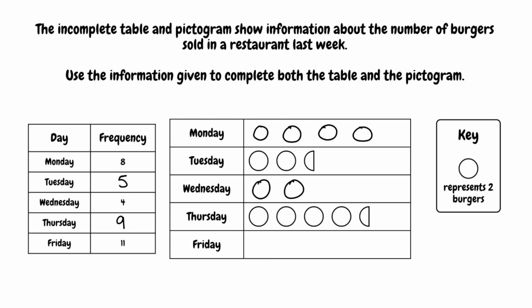And then finally on Friday, there were eleven burgers sold. Going through our pictogram again, a full circle represents two burgers — so we've got two, four, six, eight, ten. Then we need one more burger. So we're not going to draw a full circle this time; we're going to draw a semicircle, as the semicircle would represent one burger. So that would be it — we've completed our frequency table and we've also completed our pictogram.